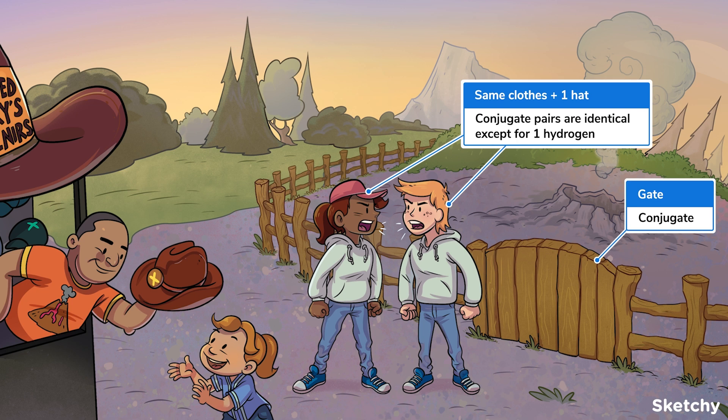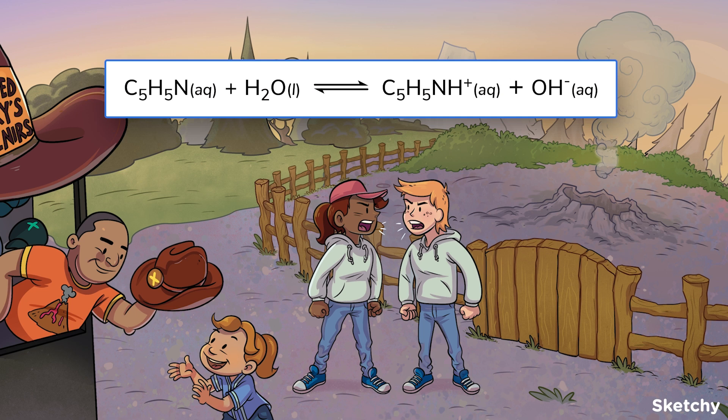In an equation, conjugate pairs appear on opposite sides of the reaction. They'll look exactly the same except the acid will have one extra hydrogen. For example, pyridine and pyridinium are a conjugate pair — the only difference between them is the extra hydrogen on pyridinium.